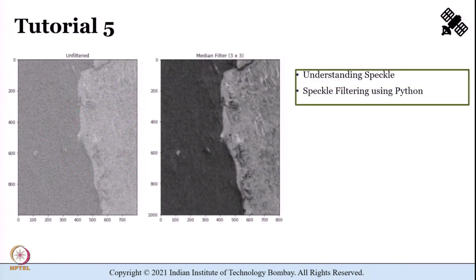Radar images have a very distinctive characteristic that looks like salt-and-pepper noise, giving it a grainy appearance called speckle. Through Tutorial 5 we shall understand more about speckle and how to perform speckle reduction through filtering. Spatial convolution using different filters shall be dealt with in Python.